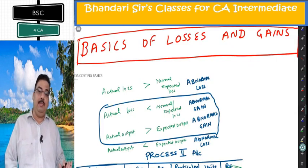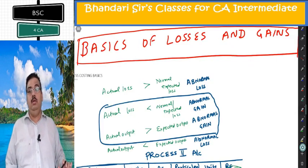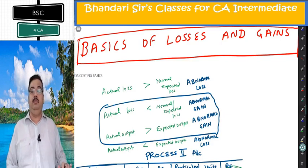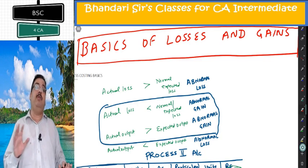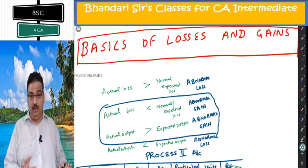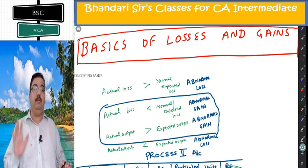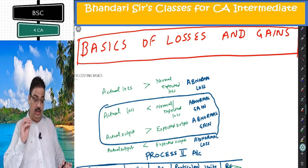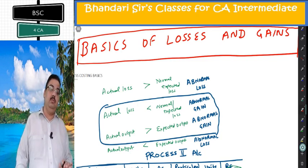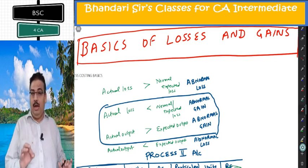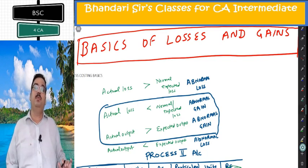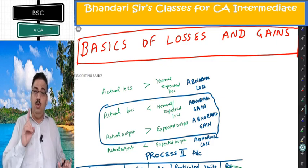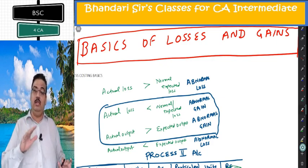The next concept is the meaning of losses and gains. Focus on three terms: normal loss, abnormal loss, and abnormal gain. Try to understand what I am explaining.